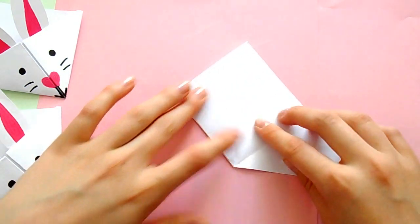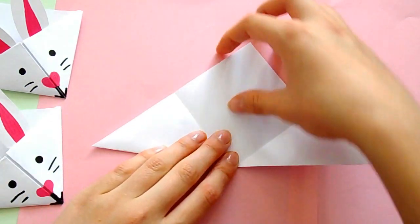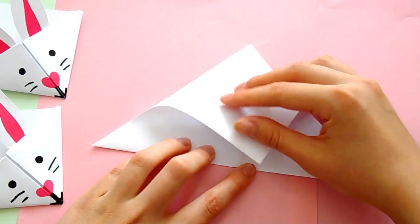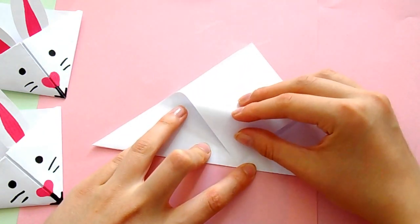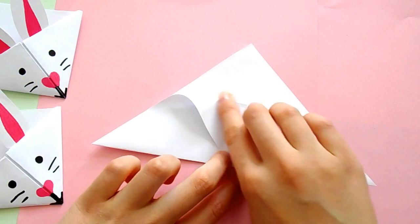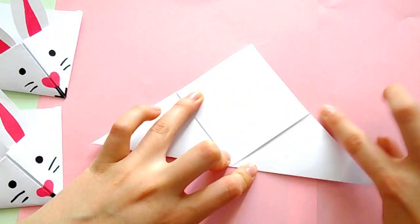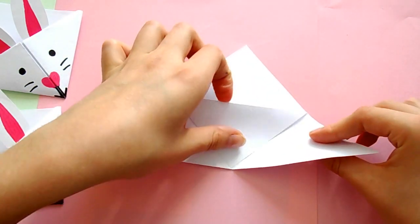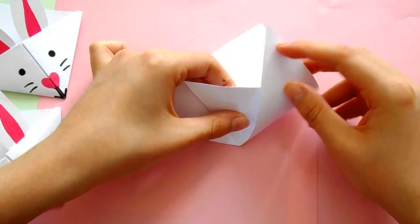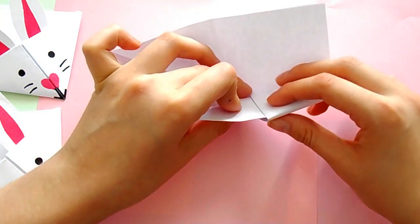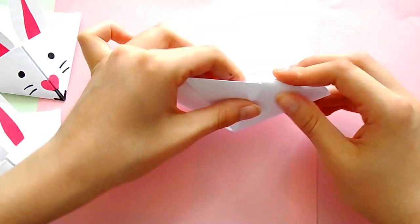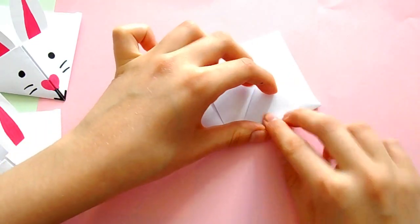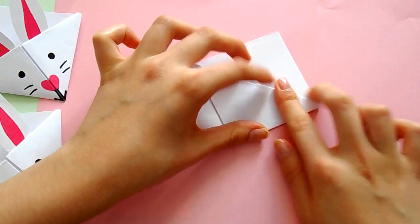Now unfold it and fold the top layer of the paper at the top point down to the bottom of the triangle and flatten down the crease. Then we're going to take the bottom corners again and tuck them behind the piece we just folded like so, creating the little pocket of the bookmark. Make sure we flatten down all of the folds.